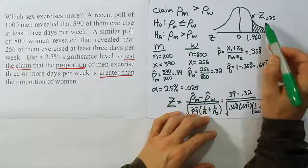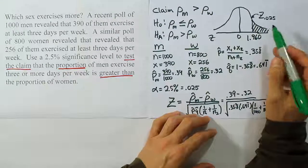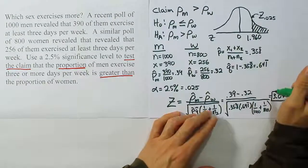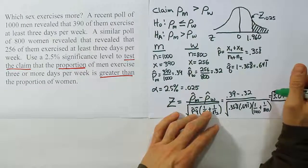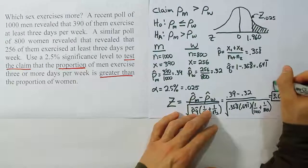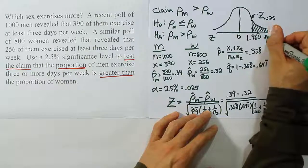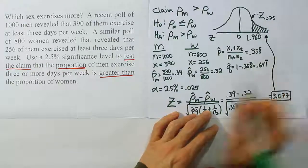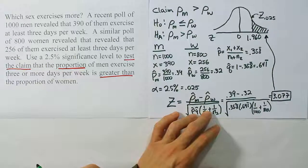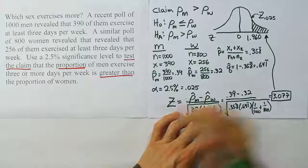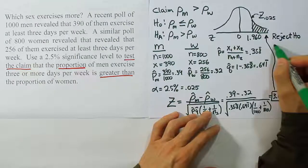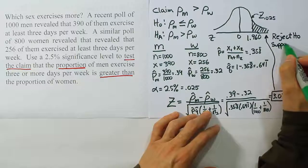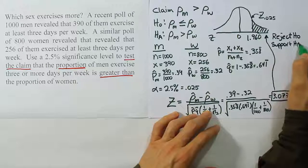Our test statistic of 3.077 lands to the right of the critical value of 1.960, placing it in the rejection region. Because it lands in the rejection region, we decide to reject the null hypothesis and therefore support the alternative hypothesis.